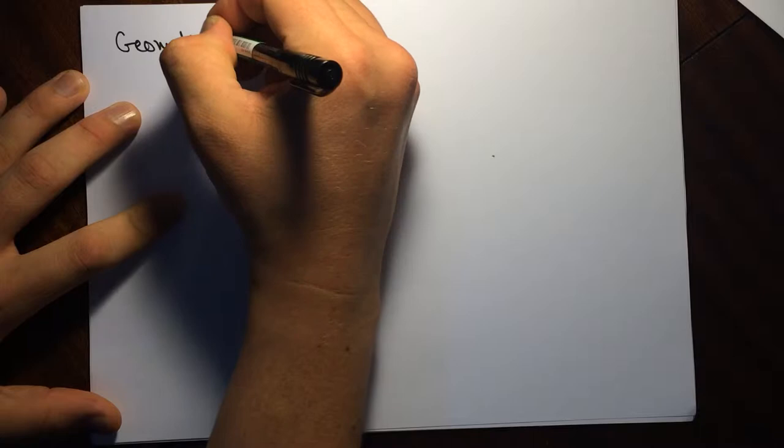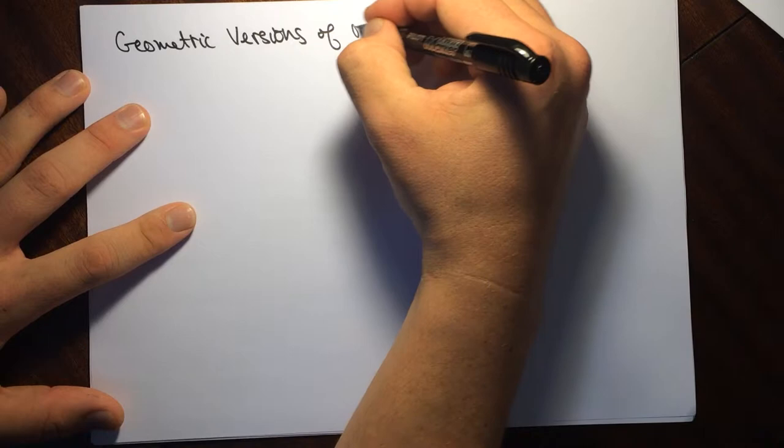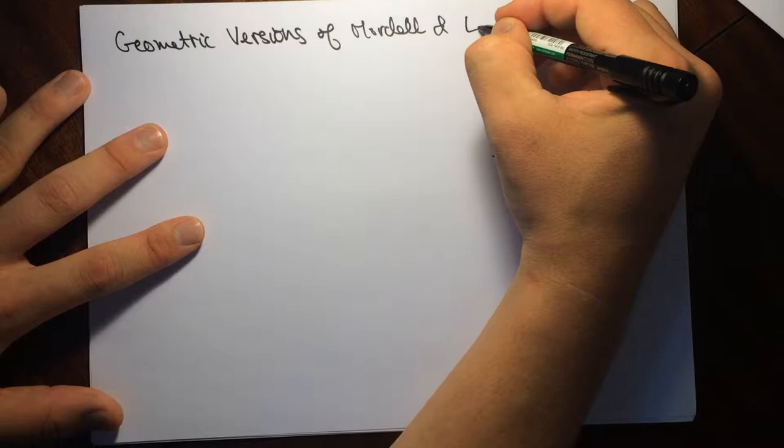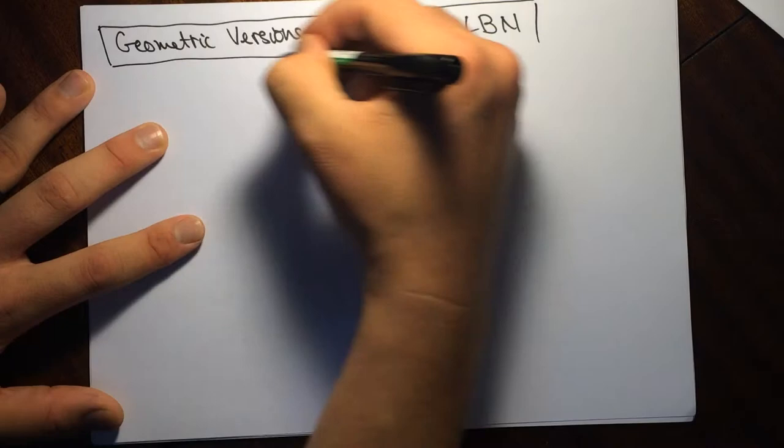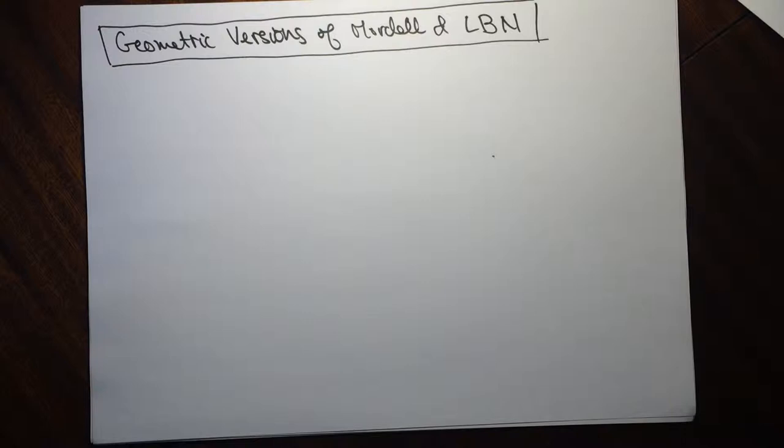In this video, I'm going to talk about geometric analogs of Mordell — geometric versions of Mordell and the Lang, Bombieri, and Noguchi conjectures. This is about the density of rational points on varieties, and these are really theorems of non-existence when you have positive varieties — hyperbolic things.